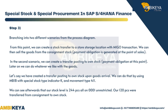Step 3: Branching into two different scenarios from the process diagram. From this point we can create a stock transfer to a store storage location with MEGO transaction and sell the goods from consignment stock — payment obligation is generated at the point of sales. In the second scenario, we can create a transfer posting to own stock using MB1B with special stock type indicator K and movement type 411. Afterwards our stock level is 244 pieces, all on 0001 unrestricted — our 120 pieces were transferred from consignment to own stock.